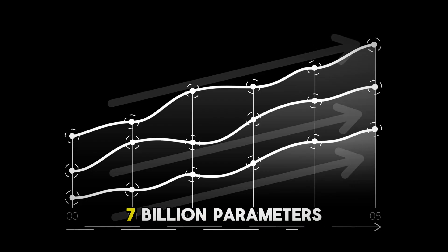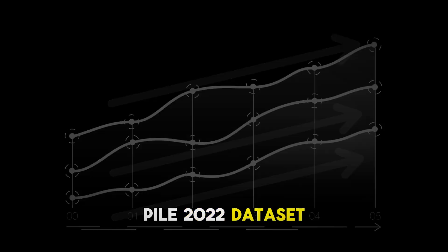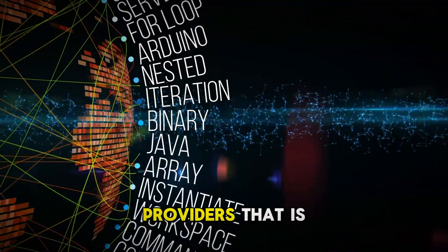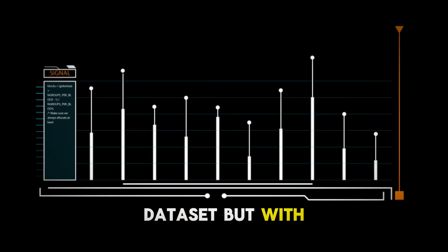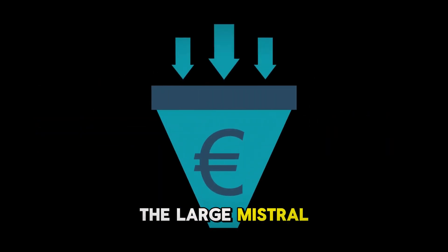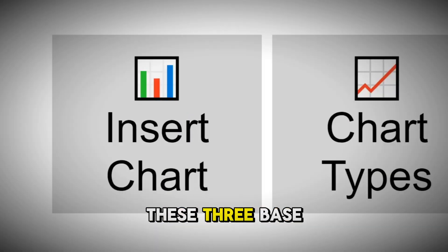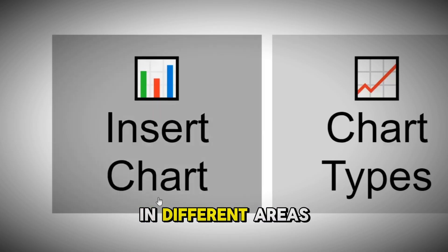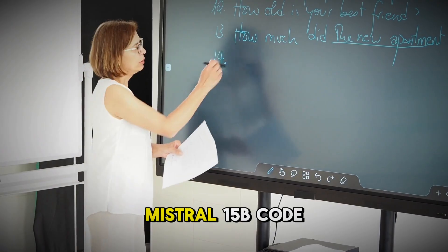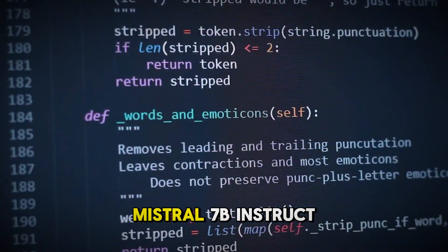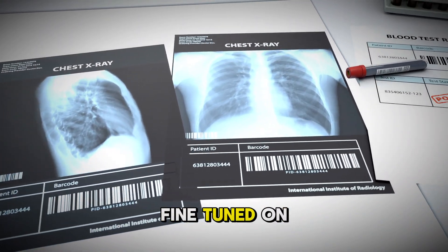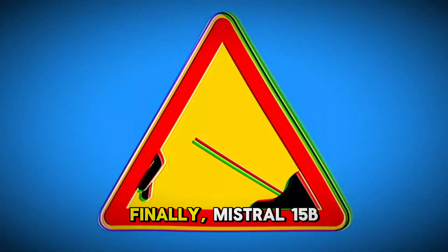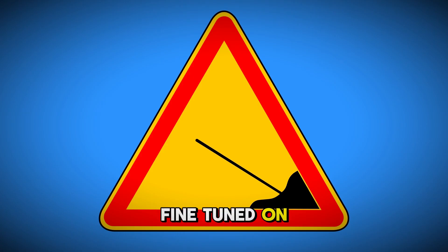The smaller MISTRAL-7B model has 7 billion parameters and is fine-tuned on the PIL 2022 dataset. The PIL is a collection of multiple data sources from different providers used to train many open-source models. The MISTRAL-15B model also uses the PIL 2022 dataset but with additional fine-tuning on MISTRAL-specific data. Finally, the large MISTRAL-30B model is further fine-tuned on the MISTRAL-specific data, as well as several books from Project Gutenberg. In addition to these three base models, there are also three additional specialized models: MISTRAL-7B INSTRUCT, MISTRAL-15B CODE, and MISTRAL-15B MED.